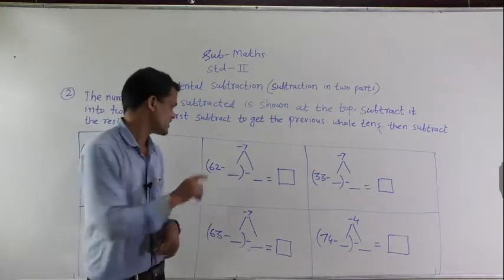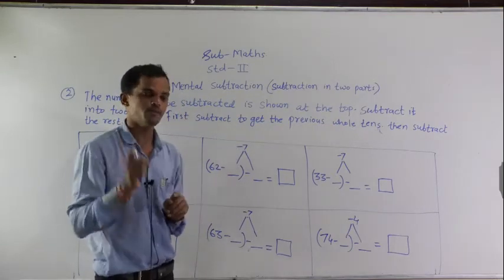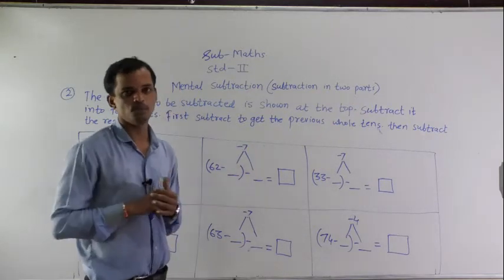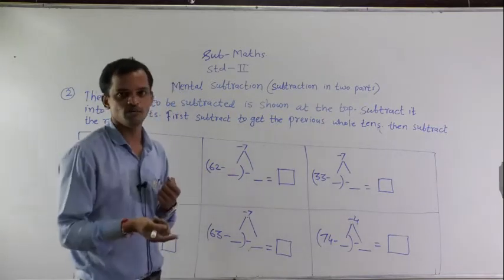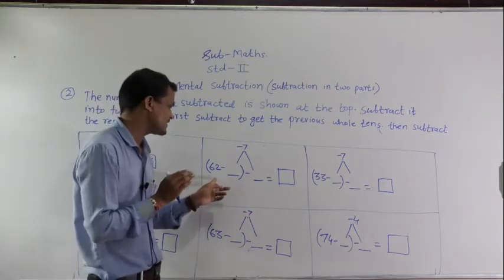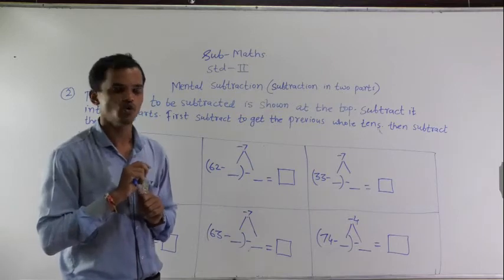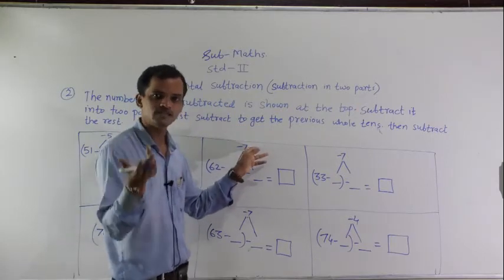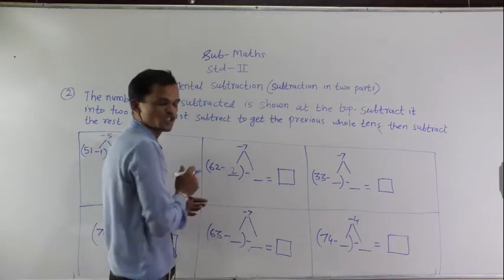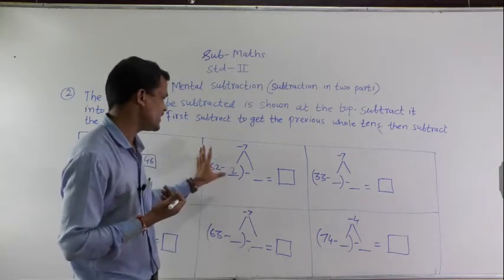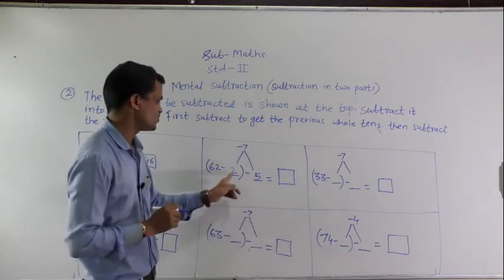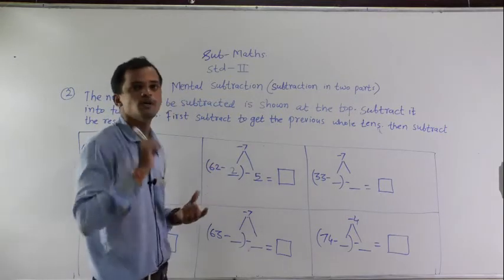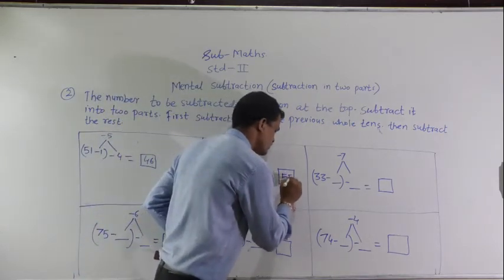See this example: 62 minus 7. We have to subtract 7 from 62. Divide 7 into 2 parts. 62 minus which number gives the previous whole ten? That is 2. If you subtract 2 from 62, you will get 60. So divide 7 into 2 plus 5: write 2 here. First subtract 2 from 62 to get 60, then 60 minus 5. So 62 minus 2 equals 60, then 60 minus 5 equals 55.